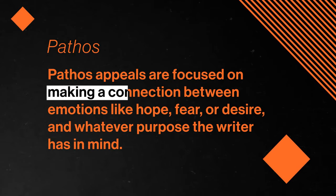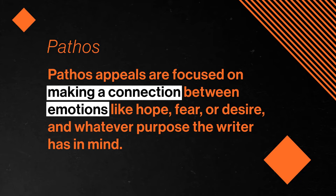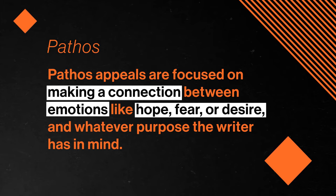Writers don't just use reason, though. Pathos appeals are focused on making a connection between emotions like hope, fear, or desire, and whatever purpose the writer has in mind. If we see an emotional appeal happening in a text, we can trace it back by thinking about why the writer wants us to feel this way. For example, restaurant ads that show happy moments with big families celebrating and eating the restaurant's food may make us feel connected to our own positive moments, but the purpose may be to make us associate that happy, connected feeling with eating the food at the restaurant, so we'll want to go there.